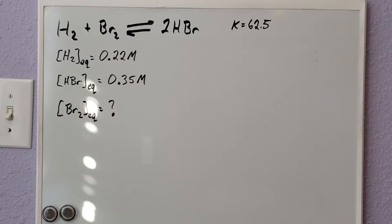For this particular problem, I'm given that H2 gas plus Br2 gas will be in a reversible equilibrium with 2 HBr gas. The equilibrium constant for that is 62.5.